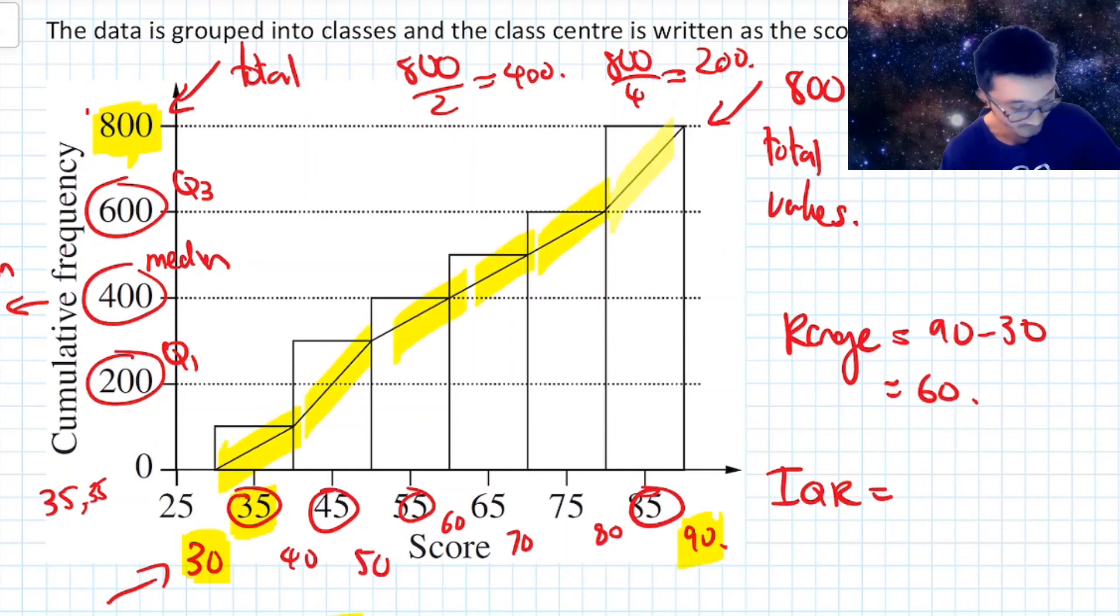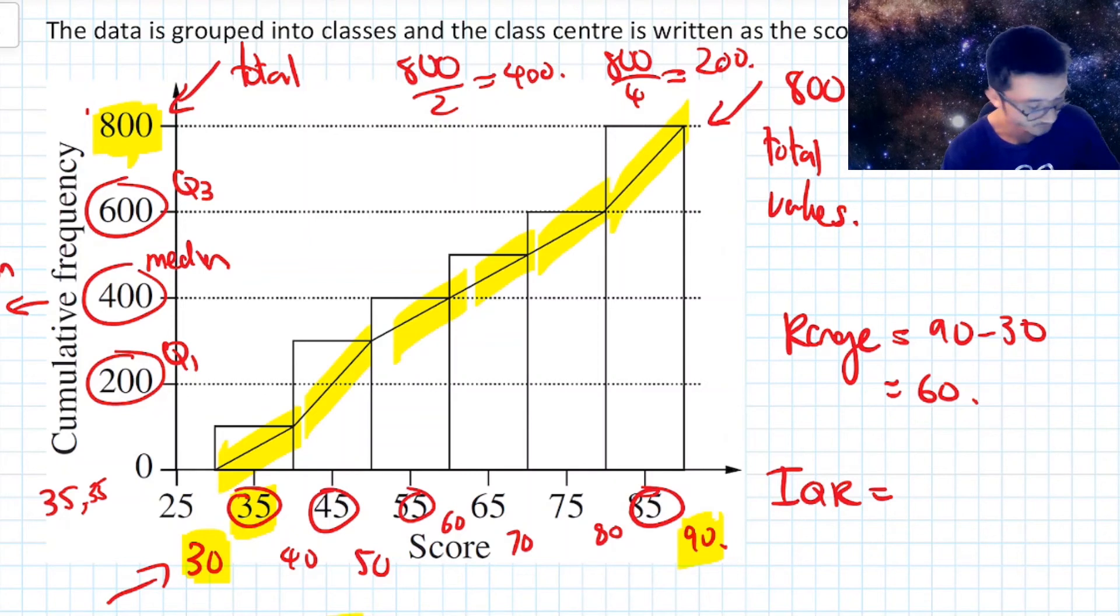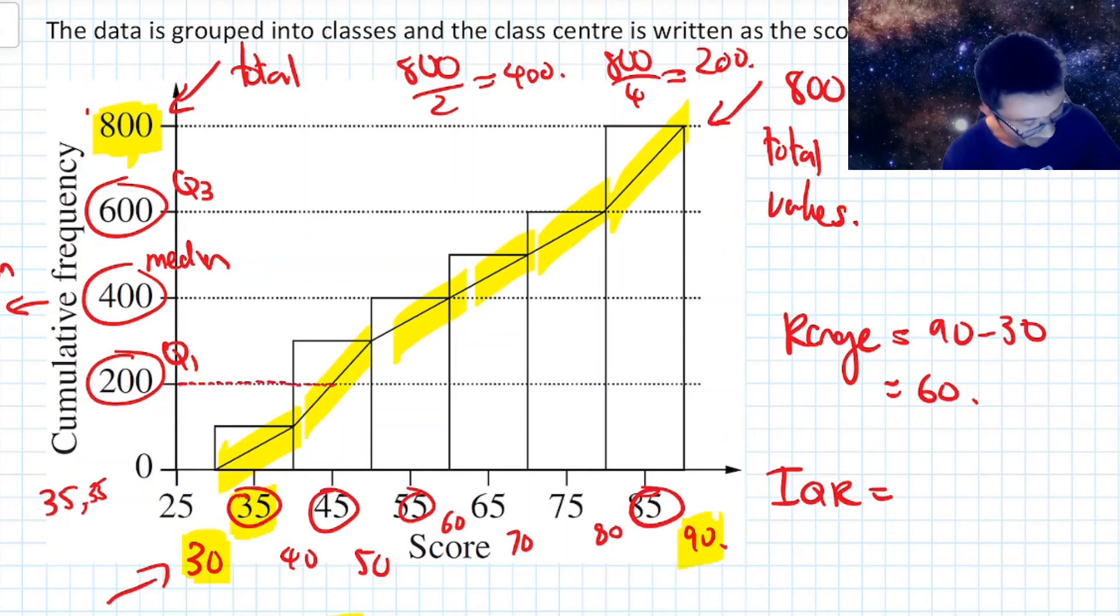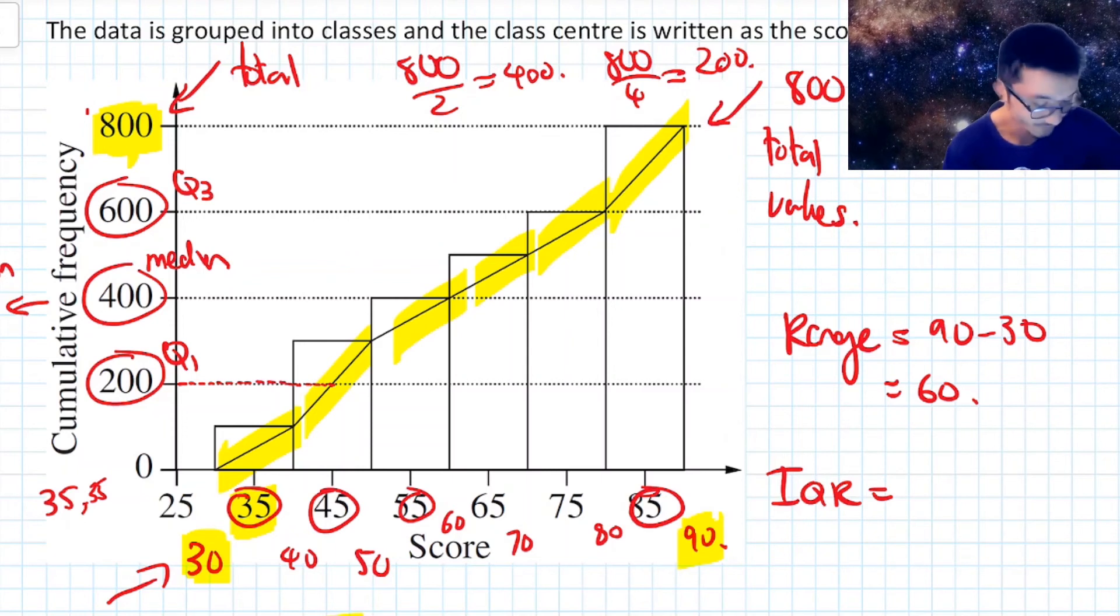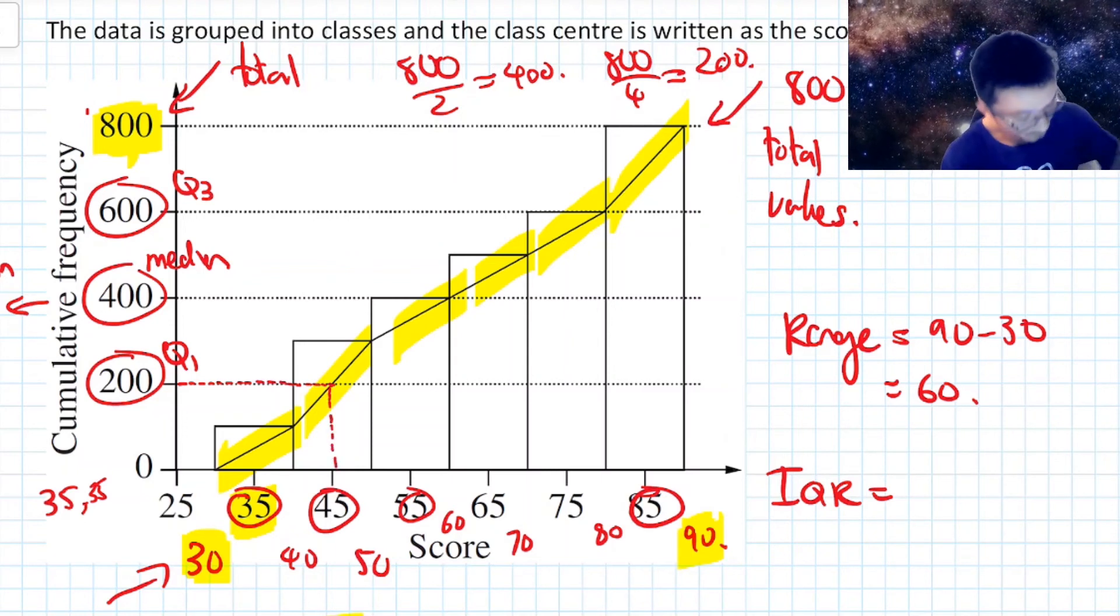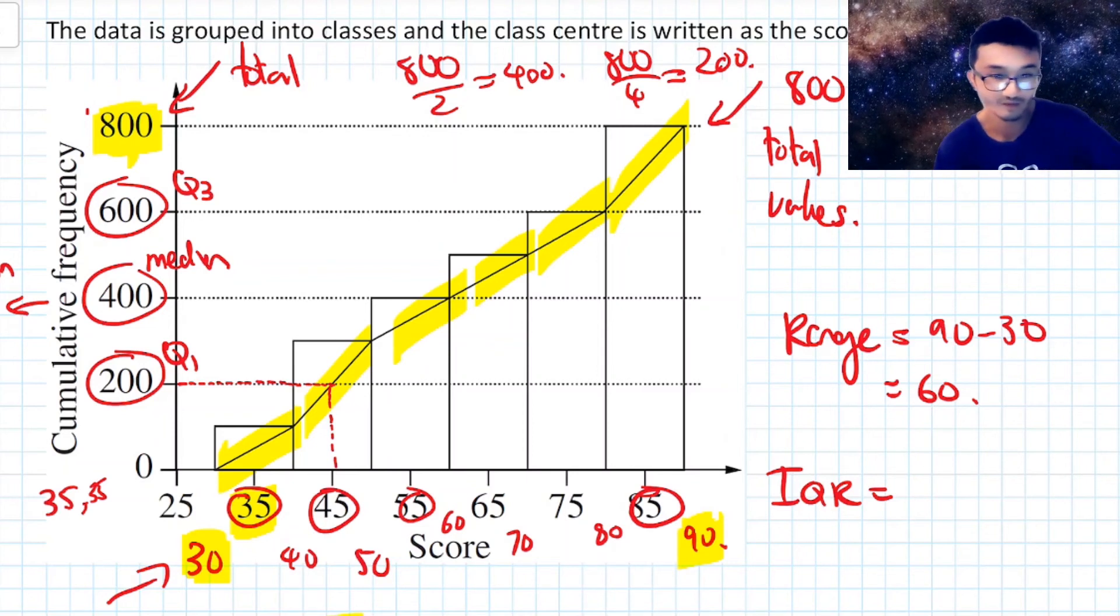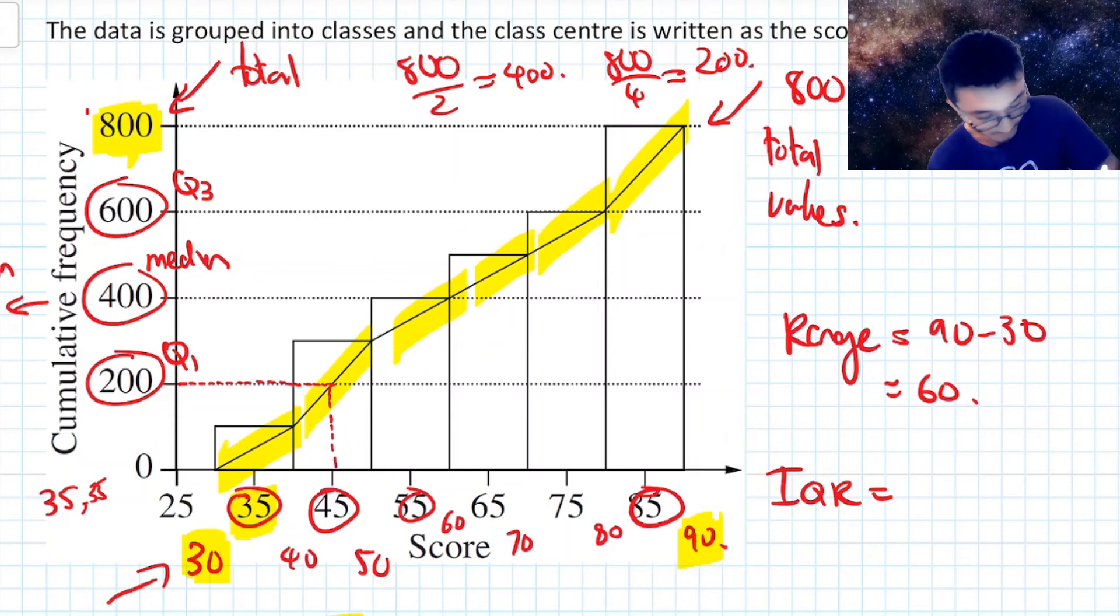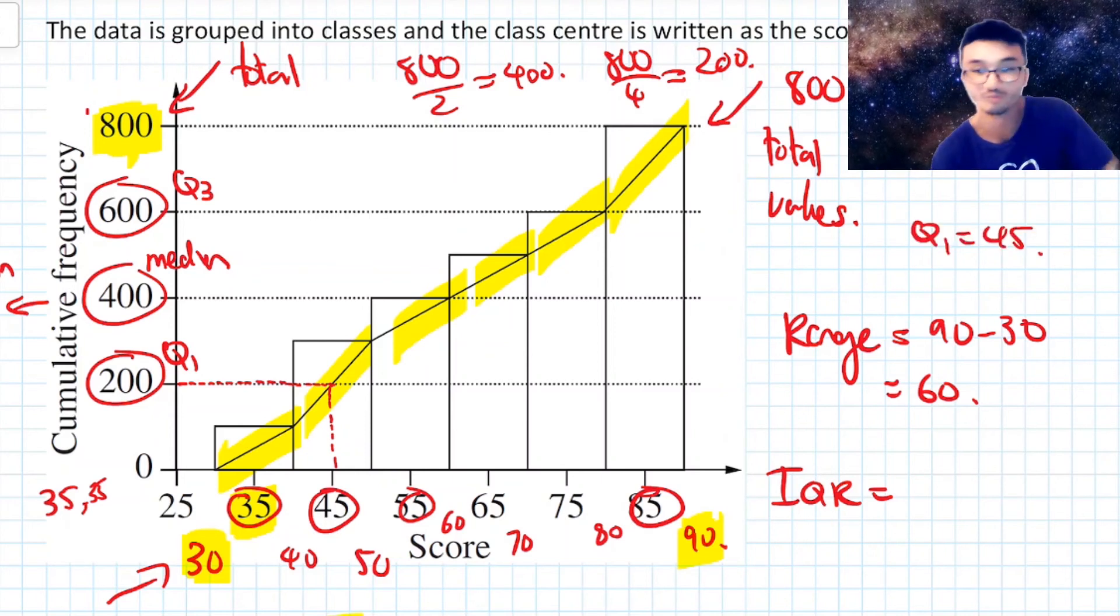Because when I construct a line out from this 200 mark, where it touches the ogive is actually where I'm going to drop it down. And that's going to be my estimation for Q1. So when I drop it down, where do I go? I get to 45. So Q1 equals to 45 is my estimation or approximation for that.